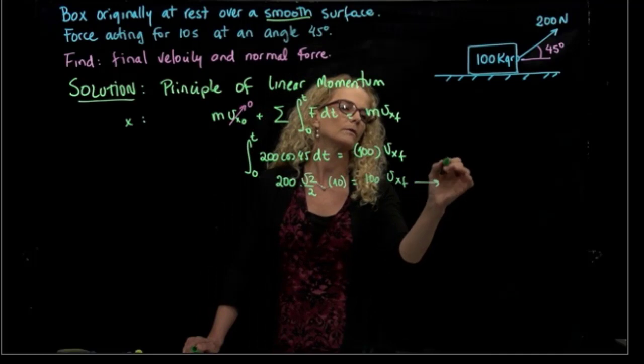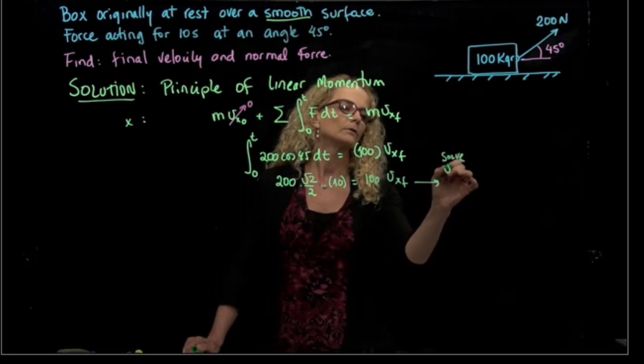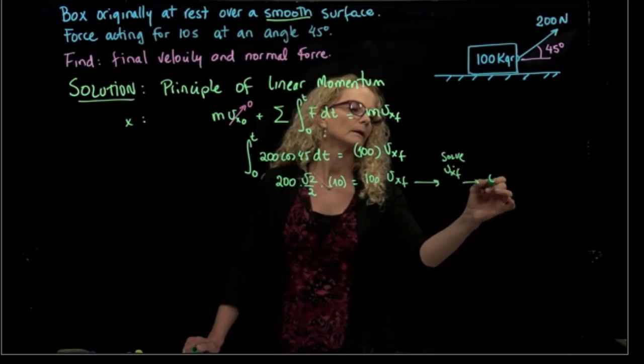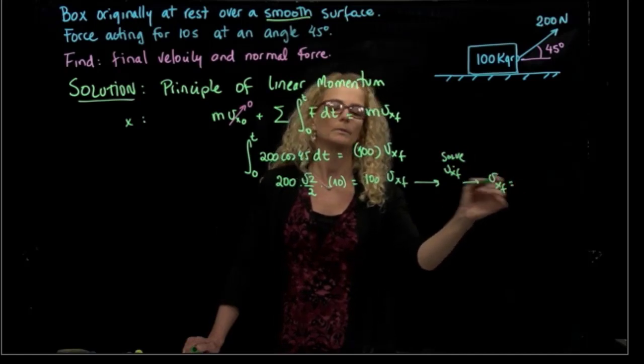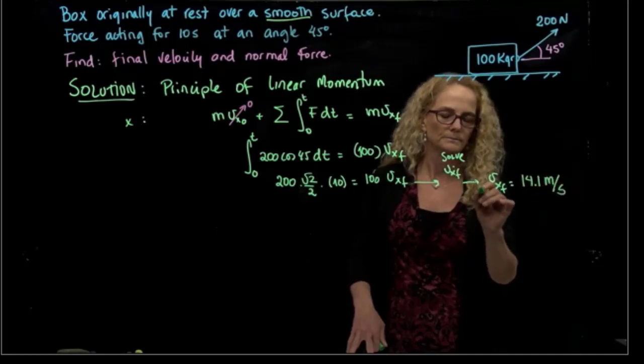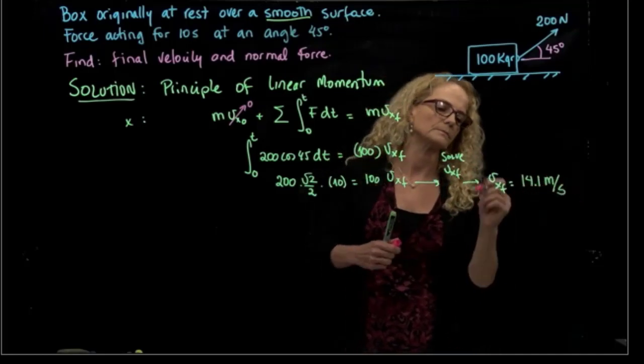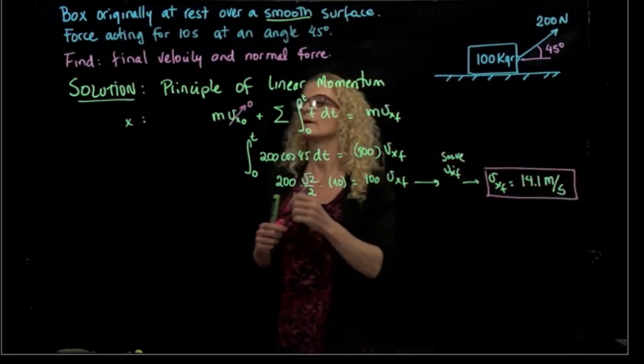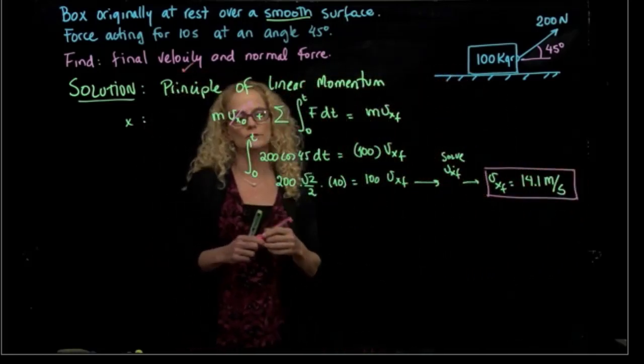I solve for velocity final in x, and I get that the velocity x final will be equal to 14.1 meters per second. So we were able to find the final velocity.